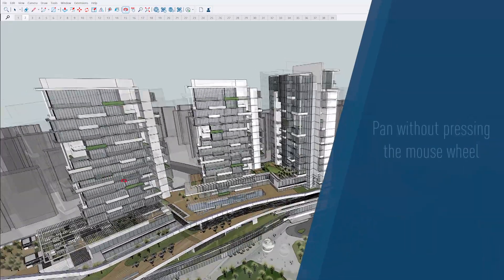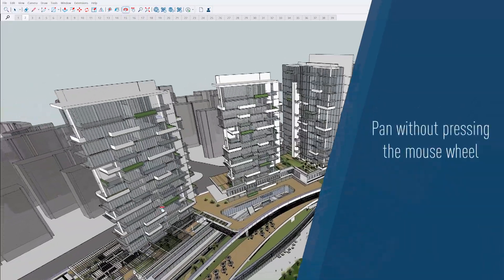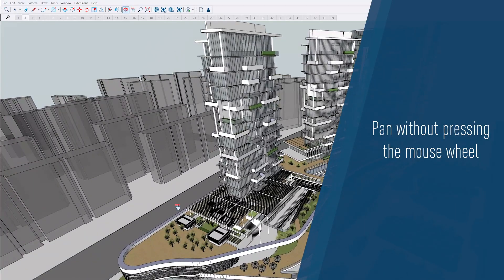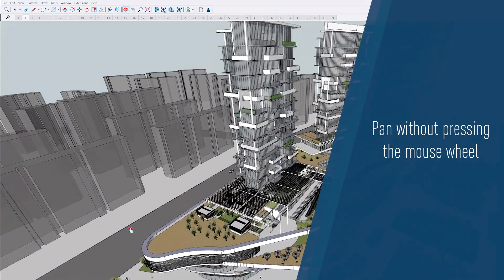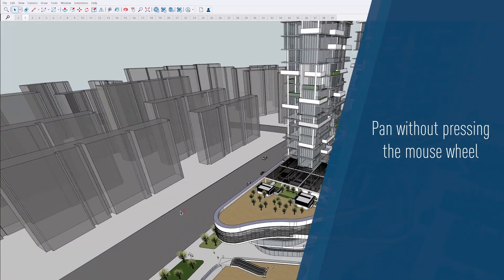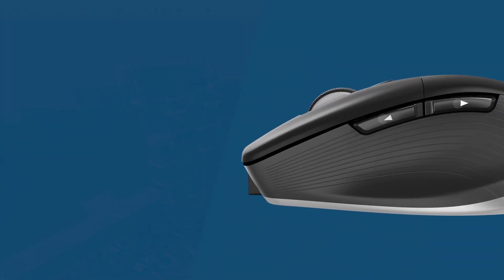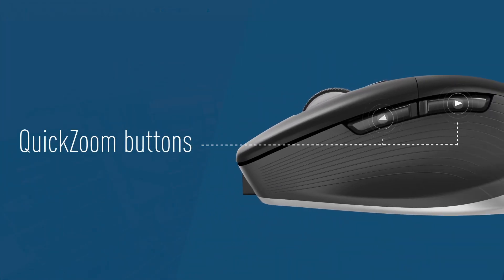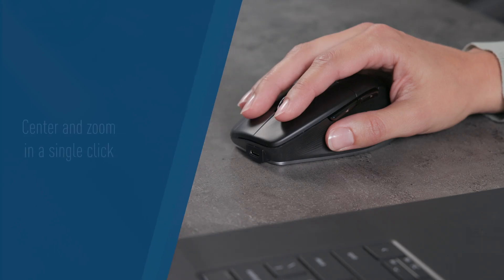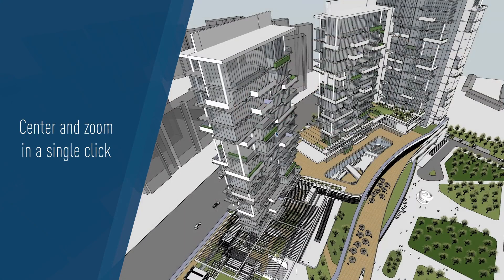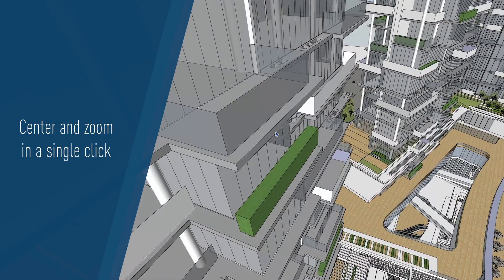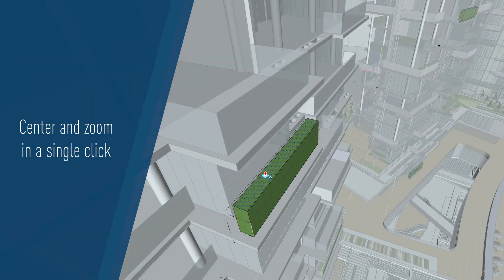Plus, you can pan without pressing the mouse wheel, making your design process easier and smoother. Quickly zoom in and out to inspect and adjust model details by using the quick zoom buttons. With just a thumb press, you can swiftly and precisely focus on any design detail.